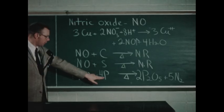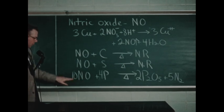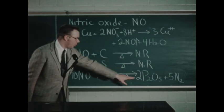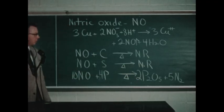We did see that burning phosphorus generates a high enough temperature to cause nitric oxide to react, the products being the white powdery P2O5 and nitrogen.